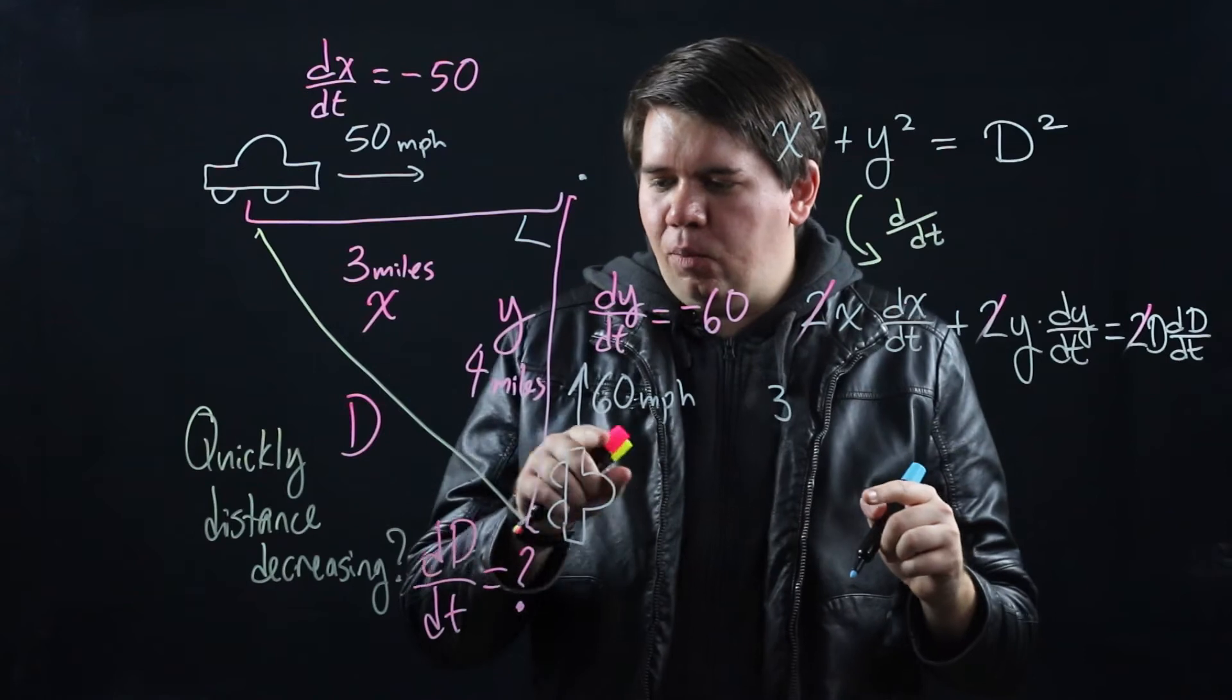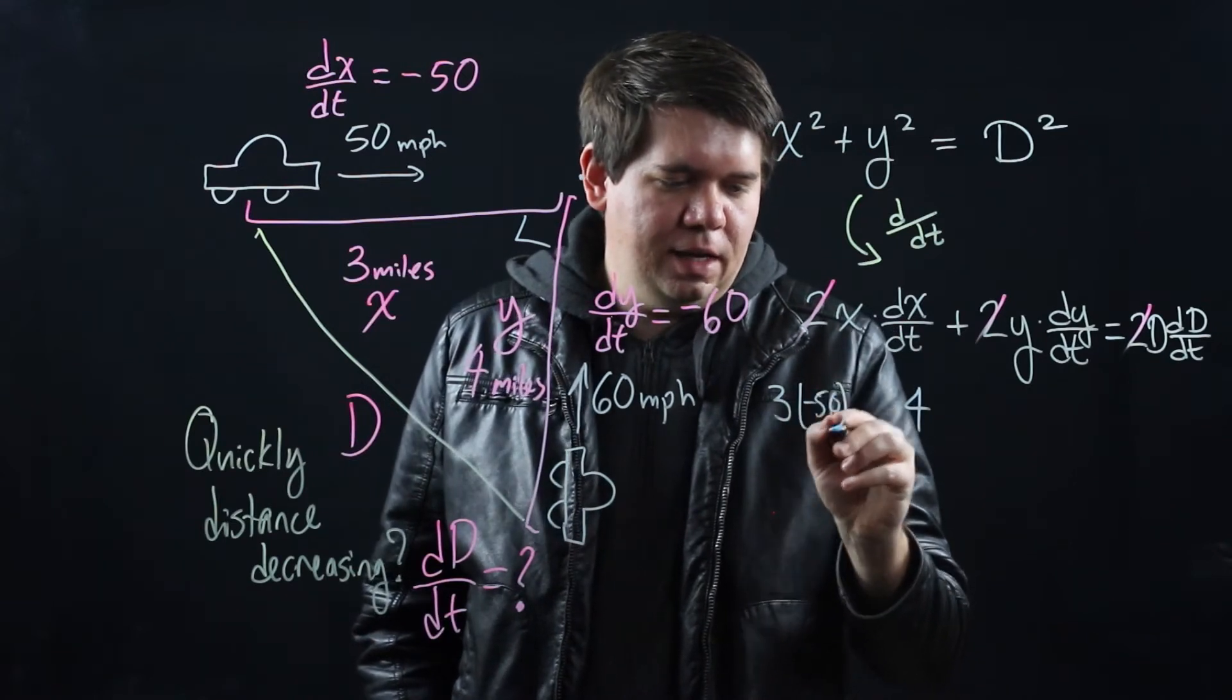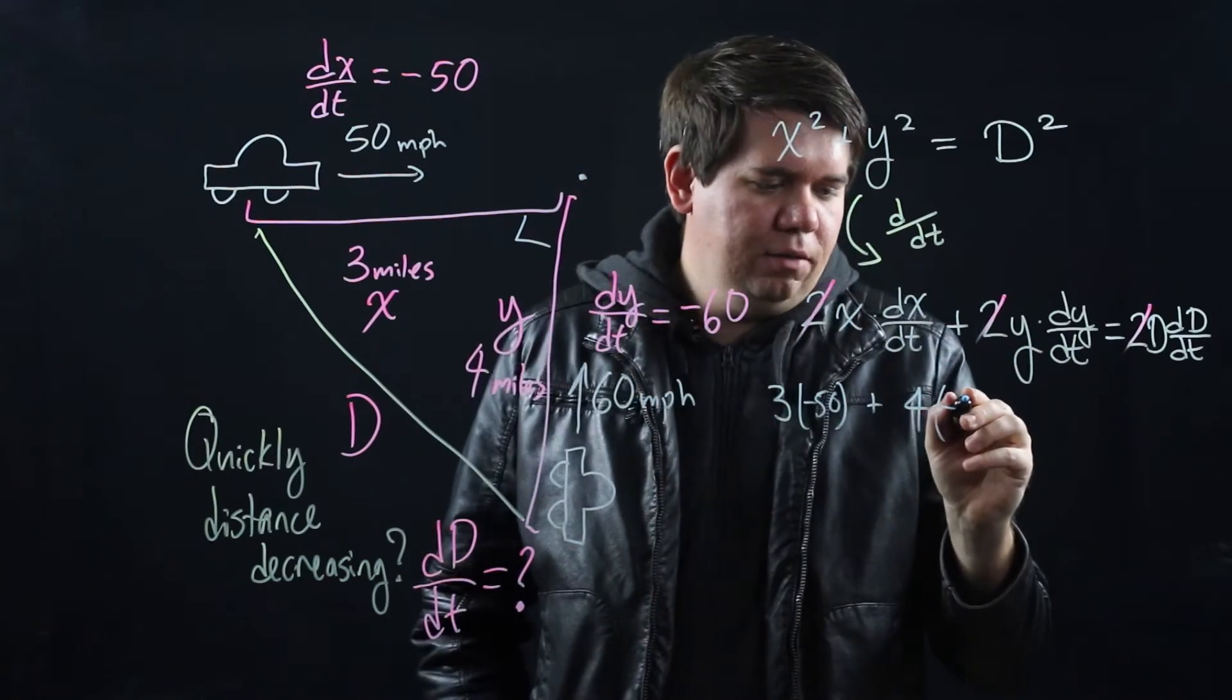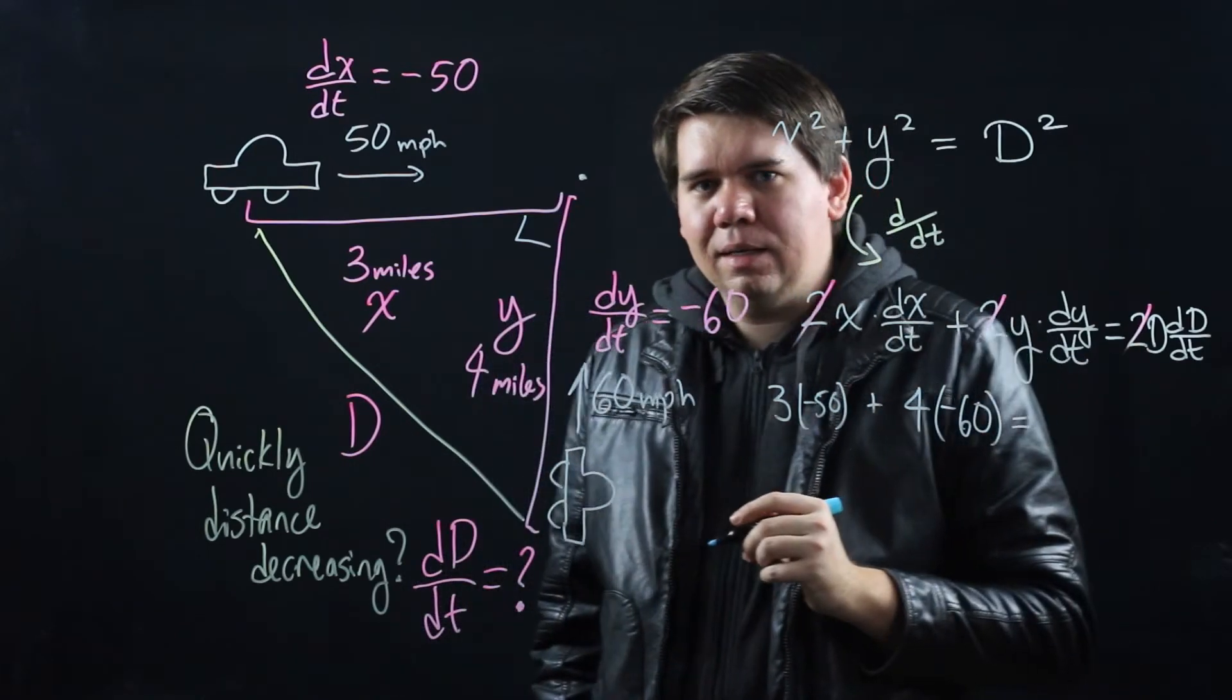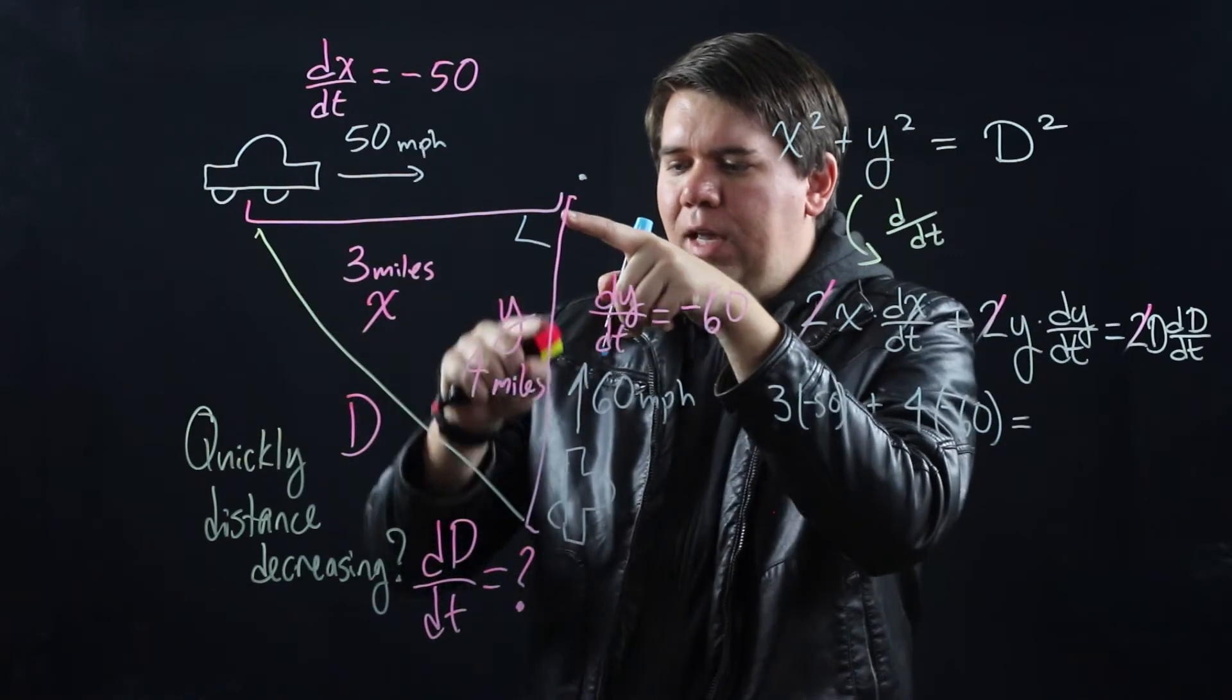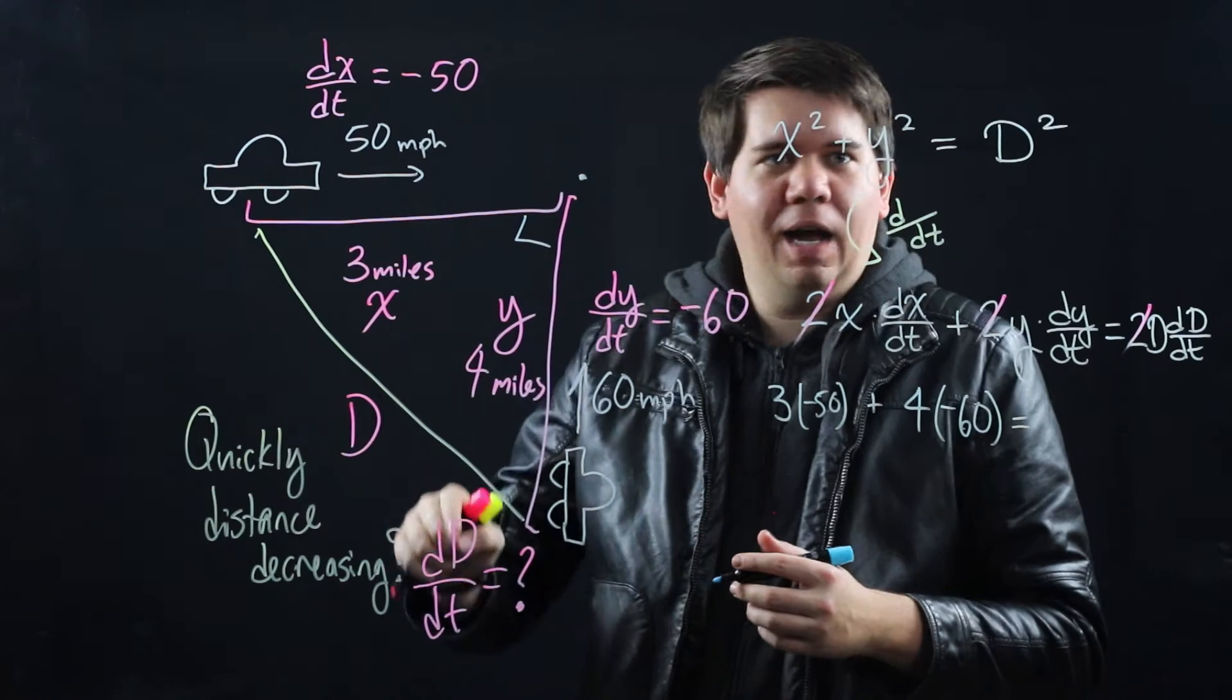So we can plug in 3 for x. Similarly we know our y is 4 so we can plug that in. dx/dt we already set as negative 50 so it's 3 times negative 50 plus your y was 4. Your dy/dt is negative 60. 4 times negative 60 is equal to d. What is d? d is the distance between you. Well let's think. If at this moment my x is 3 and my y is 4 then I can just use the Pythagorean theorem to say if it's a 3 and a 4, d must be 5.